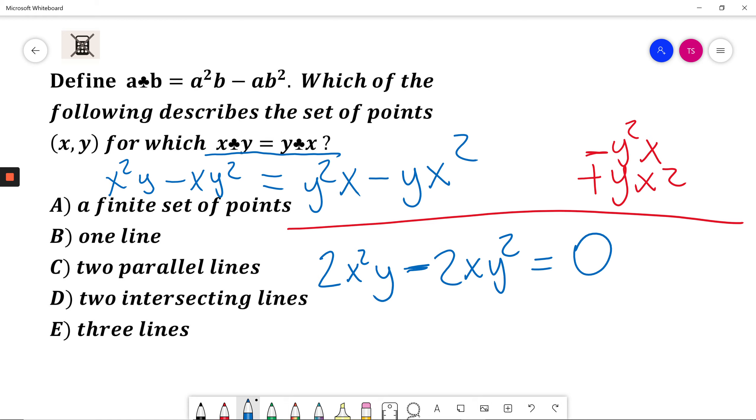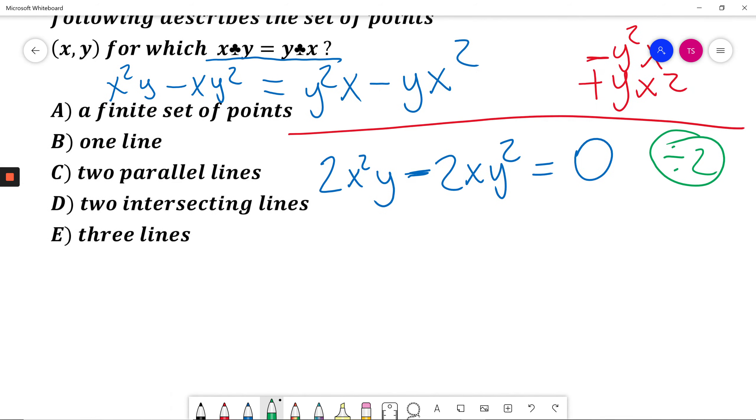Dividing both sides by 2 gives x²y - xy² = 0.